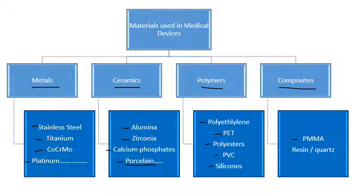Composites are a blend of one or more polymers, or a blend of a polymer and ceramic, etc. An example is PMMA — polymethyl methacrylate — which is used for bone cement in older implants and also in contact lenses. It's a blend of two different polymer types. Resin and quartz could also be used as a composite.